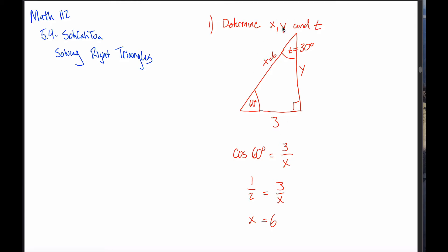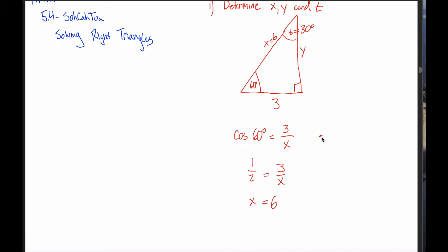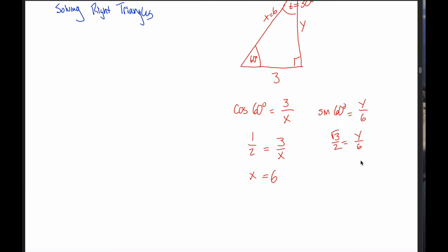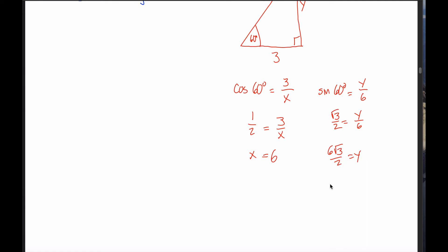I now have x and t, and all I have to do is solve for y. One way you could do it is to say the sine of 60 degrees relates together the length opposite — that's y — to the hypotenuse, which I now have: that's 6. So the sine of 60 degrees equals y over 6, opposite over hypotenuse. The sine of 60 degrees is root 3 over 2, so root 3 over 2 equals y over 6. Multiply the 6 over: I get 6 times root 3 over 2, which reduces to 3 root 3 for y.